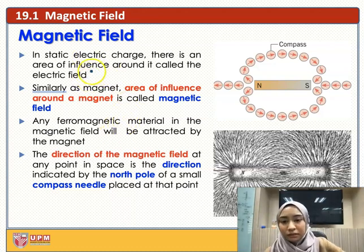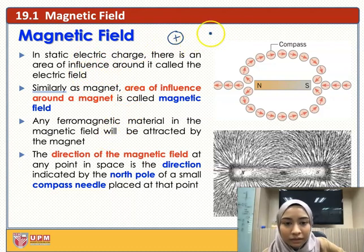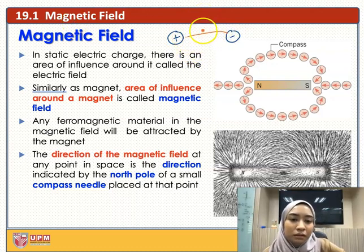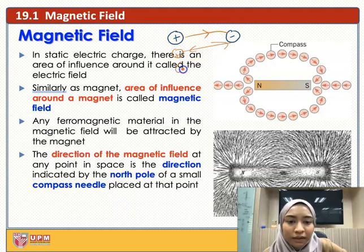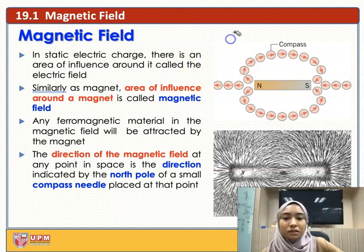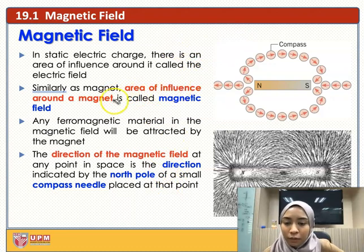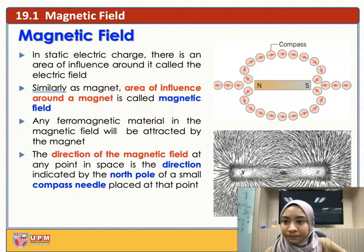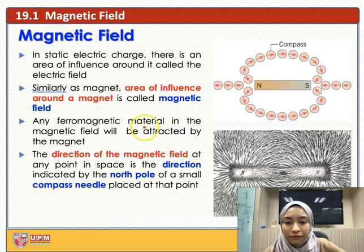Moving on — in a static electric charge there is an area of influence around it called the electric field. When we have a positive and negative charge, there is an electric field going from the positive to the negative. These are your electric field lines. Similarly, the area of influence around a magnet is called the magnetic field. Any ferromagnetic material in a magnetic field will be attracted by the magnet.